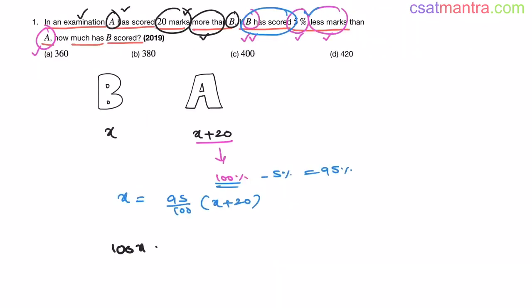Now, 100X is equal to 95X plus 95 into 20. 100 minus 95X. That is 5X is equal to 95 into 20. So, X is equal to 95 into 4.